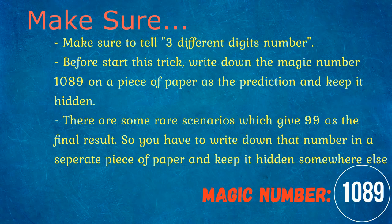Before you start this trick, you have to write down the magic number 1089 on a piece of paper as the prediction and keep it hidden. If you and your friend follow the steps correctly, the final result will almost always be 1089.